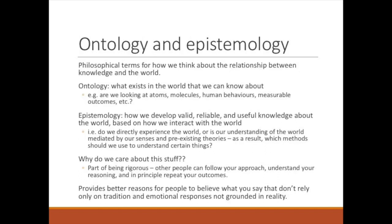Let's talk about two important terms from the philosophy of knowledge: ontology and epistemology. Ontology refers to what exists in the world that we can know about — are we looking at atoms, molecules, human behaviours, measurable outcomes, or the meanings of certain texts? Epistemology is how we develop valid, reliable, and useful knowledge about the world based on how we interact with it. In short, ontology is what is there to know; epistemology is how we know it.